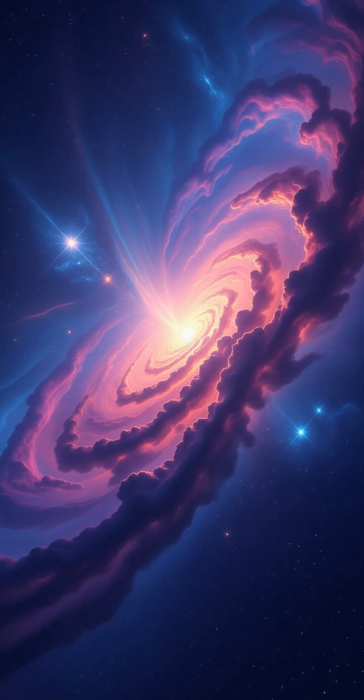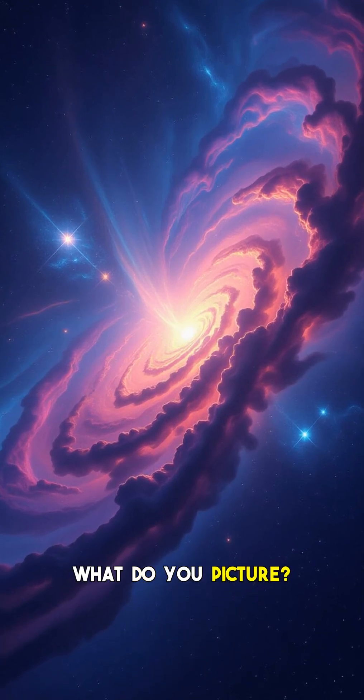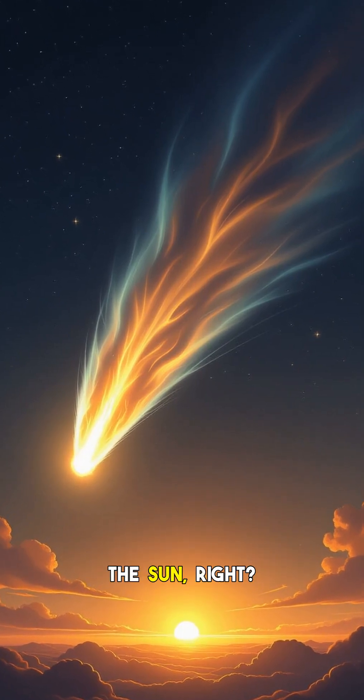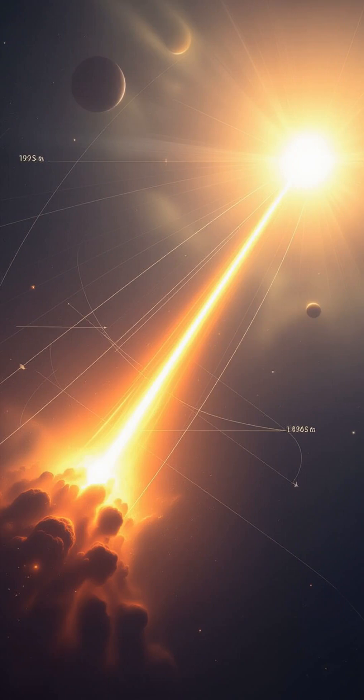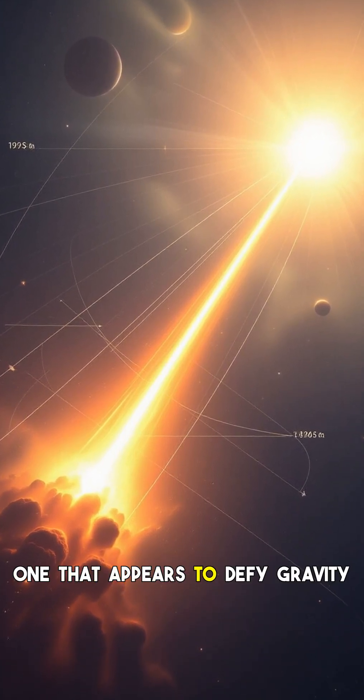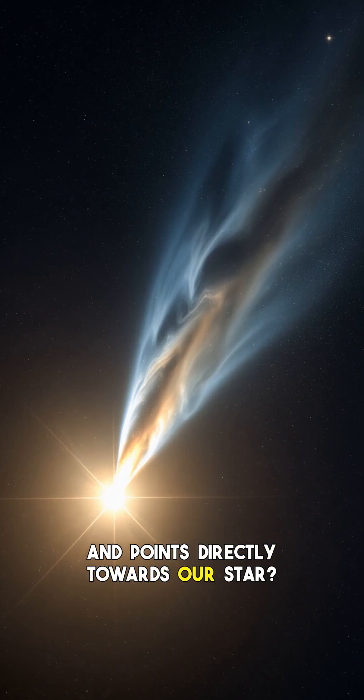Hey everyone and welcome back to the channel. Imagine a comet. What do you picture? A bright head and a long glowing tail streaming away from the sun, right? That's what physics dictates. But what if I told you some comets exhibit an impossible tail, one that appears to defy gravity and points directly towards our star?